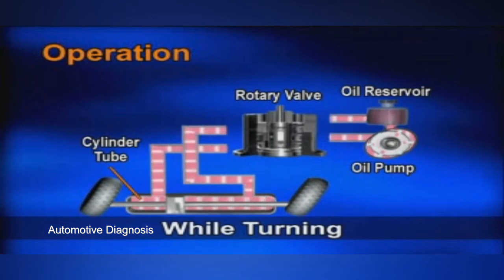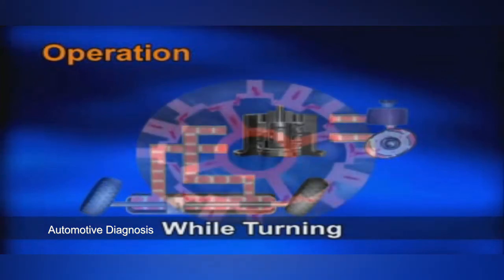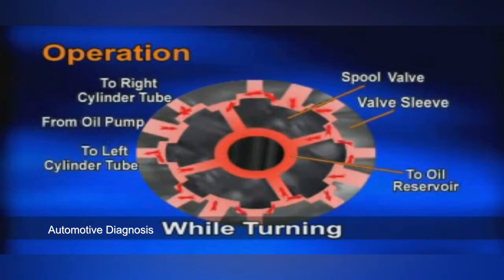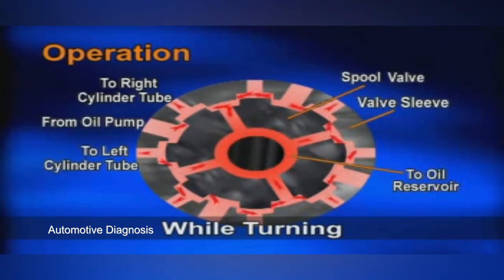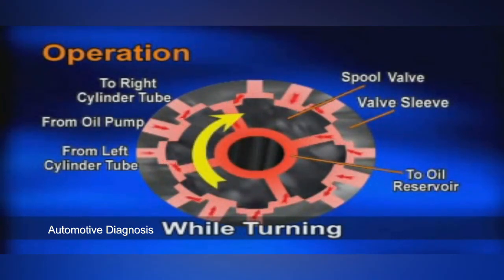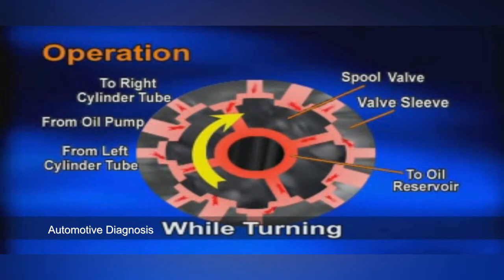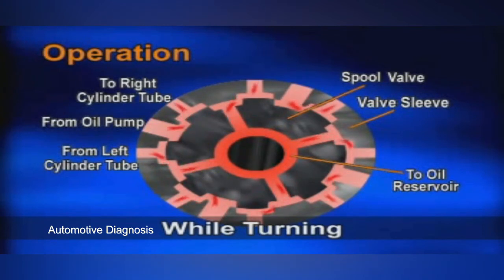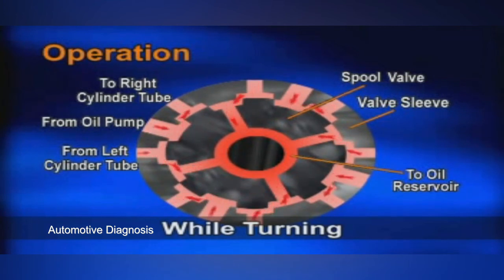As it leaves the drilled passages from the pump supply groove, the fluid is now sealed from the right turn circuit and from the pump return circuit. These two paths are sealed by lands on the spool valve, which are now sufficiently aligned with lands on the valve sleeve to block pump flow. All pump output now flows through drilled passages into the appropriate groove on the outside of the valve sleeve.